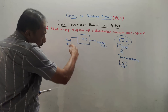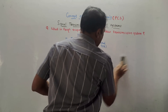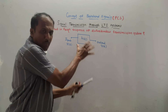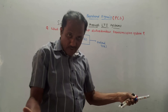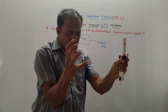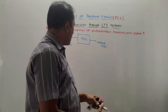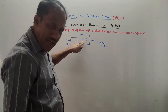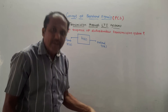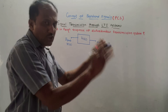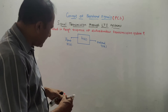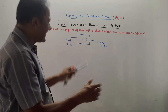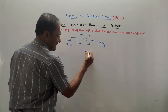This is the block diagram of an LTI system. Input is denoted by X(t) and output is denoted by Y(t). A system is basically a device which accepts input, modifies it, and produces the required output. The function performed by the system is denoted by H(t), which is also called the impulse response of the system.